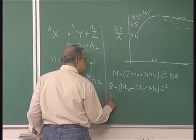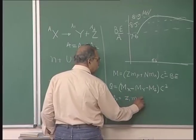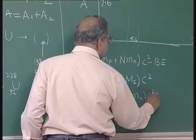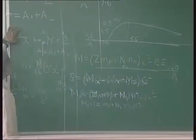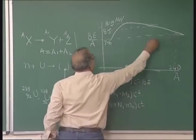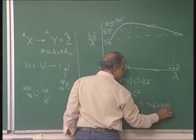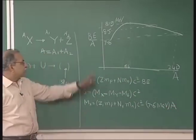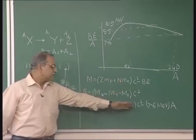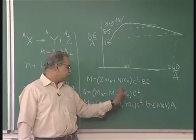Writing this out: M_X = Z·m_p + N·m_n (in c² units) minus the binding energy of X, which is 7.6 MeV times A (binding energy per nucleon times number of nucleons). For each fragment Y and Z, since they have roughly half the mass number and their binding energy per nucleon is 8.5 MeV, the binding energy for each fragment is 8.5 MeV times A₁ or A₂ respectively.